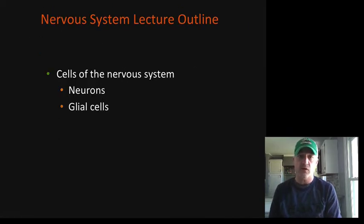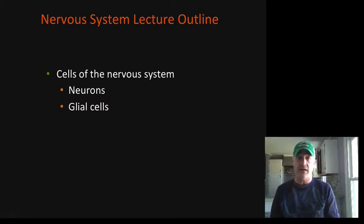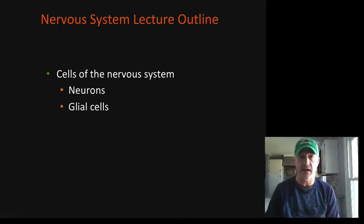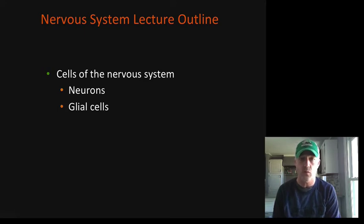When it comes to the nervous system, we're looking at two main cell types. Those are going to be your neurons — the impulse-producing cells that send messages throughout the body — and then the glial cells, which are support cells. There are a number of different types of glial cells, which we'll cover in the second show. Today we're just going to look at neurons, their parts, and the basics.